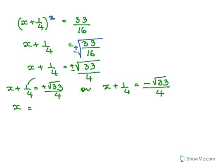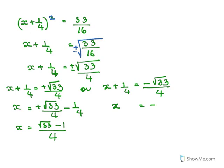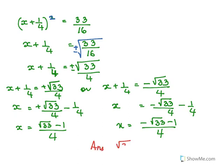Solving both cases: for the plus case, x = √33/4 - 1/4 = (√33 - 1)/4. For the minus case, x = -√33/4 - 1/4 = (-√33 - 1)/4. So the answers are x = (√33 - 1)/4 or x = (-√33 - 1)/4.